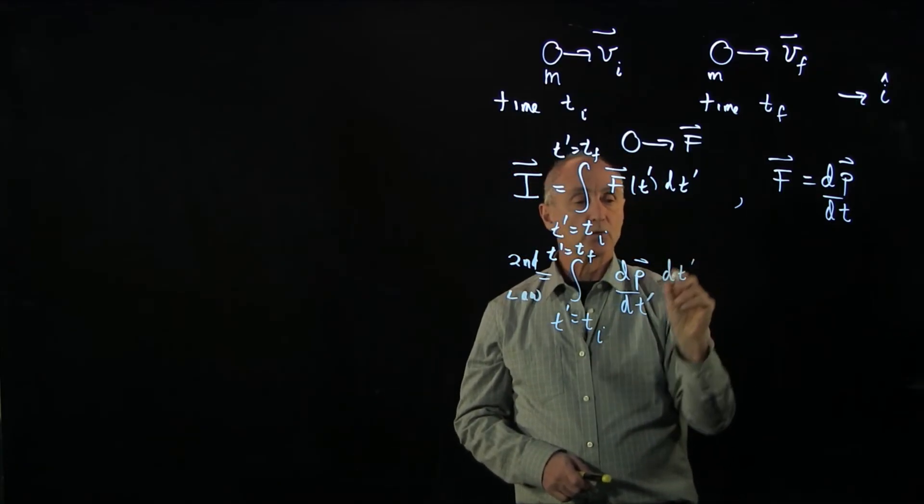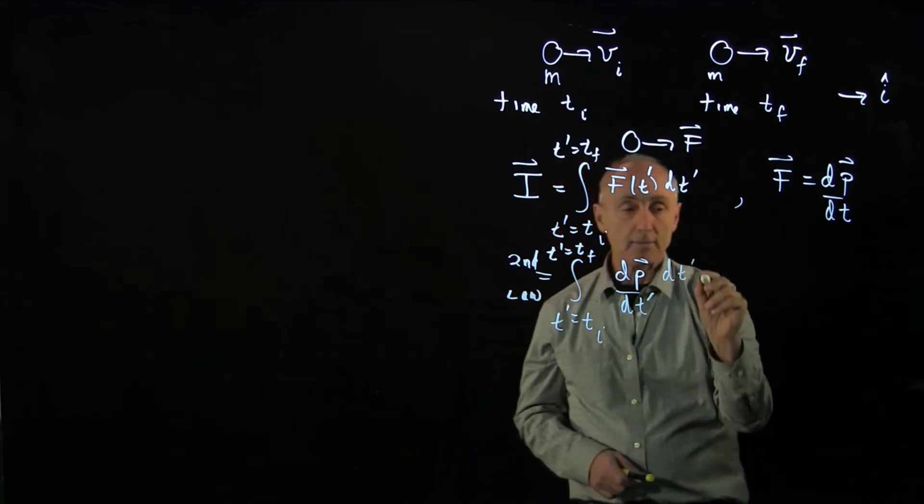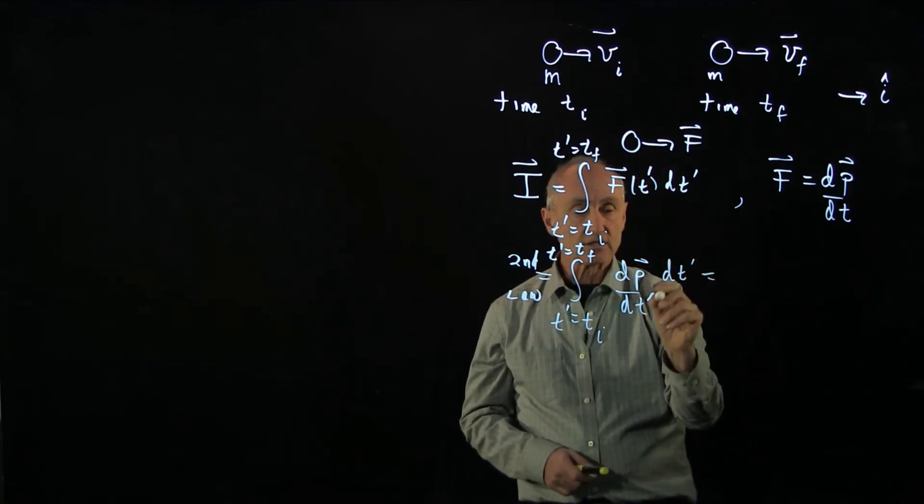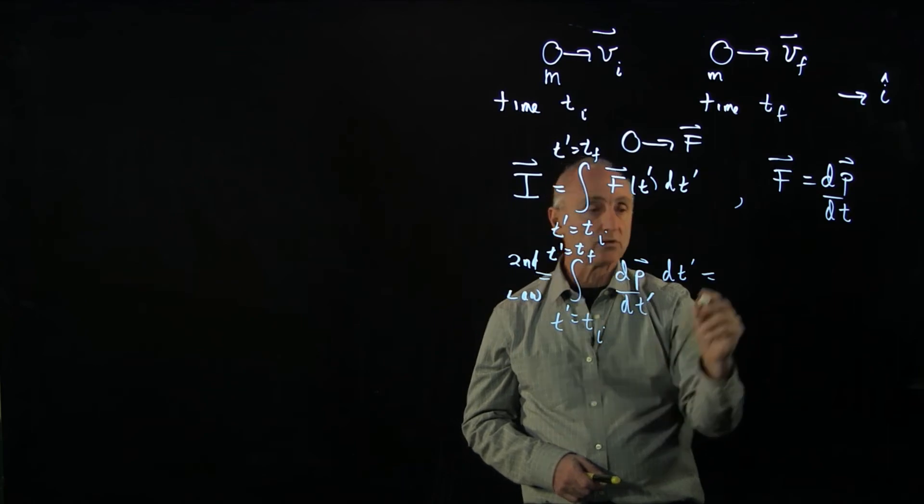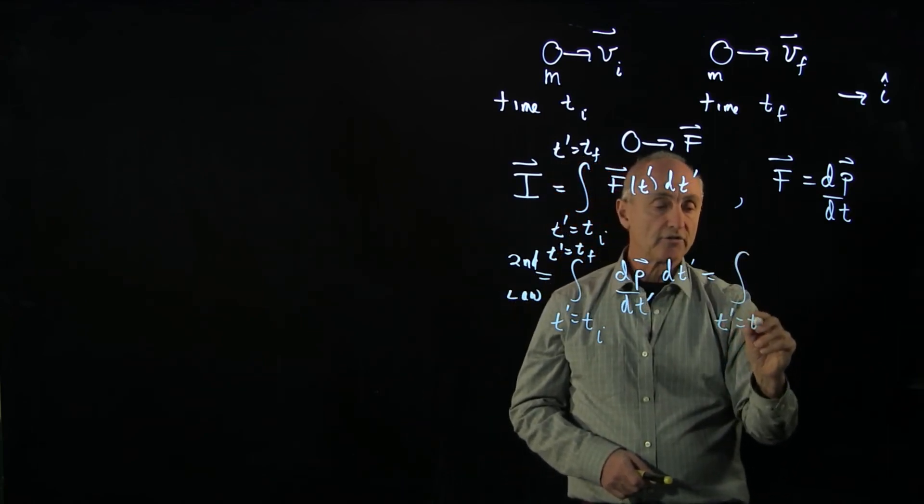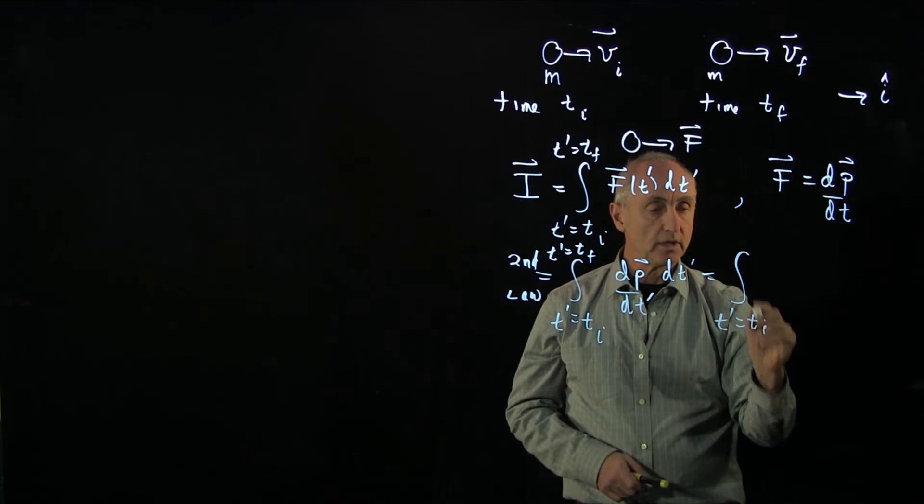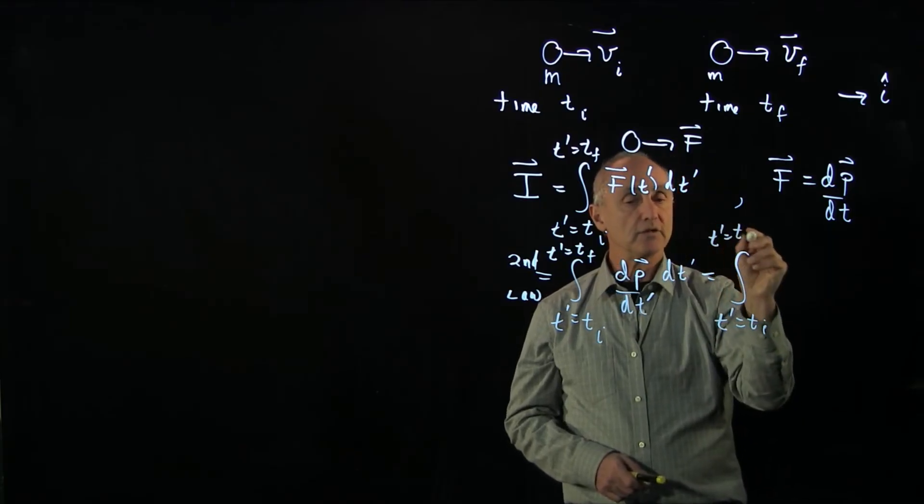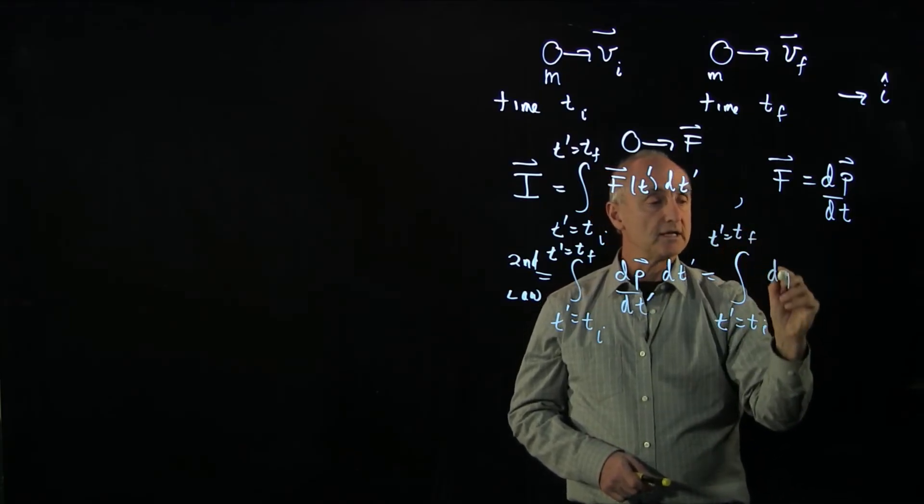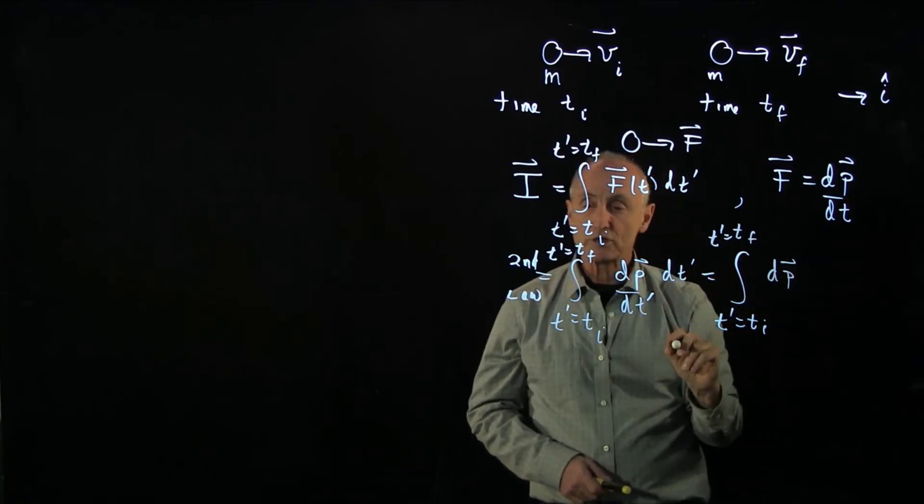And because we're using our dummy variable, dt prime, you can see that the two dt primes cancel. And this just becomes the integral from t initial, t prime, to t final of dp. And this is a pure differential.